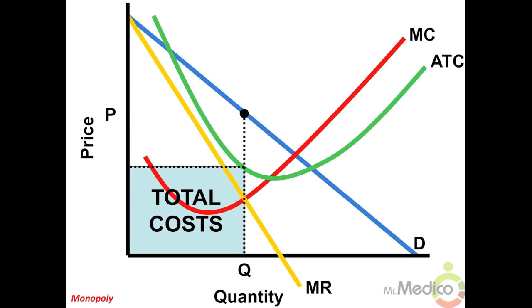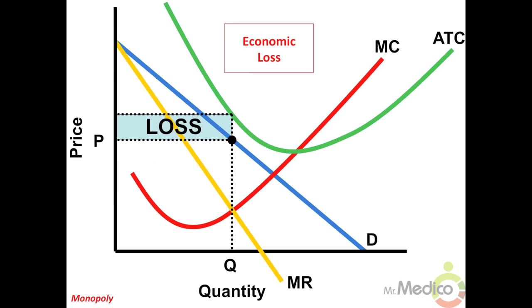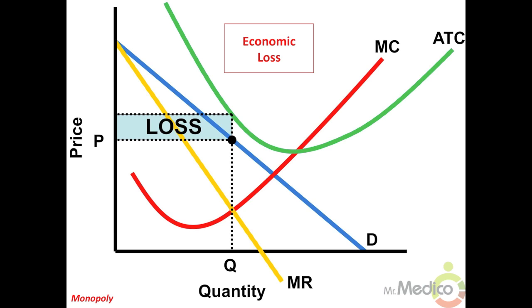In this graph we see the area of total economic costs. To graph a monopoly taking an economic loss, the price must be less than the average total cost curve at the MR equals MC level of output. In this example, total costs exceed the firm's total revenue.